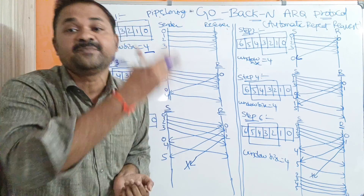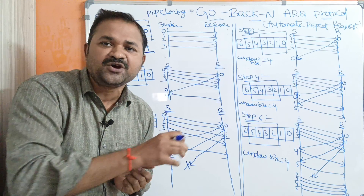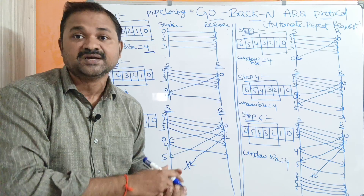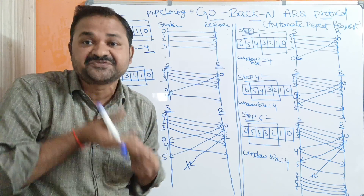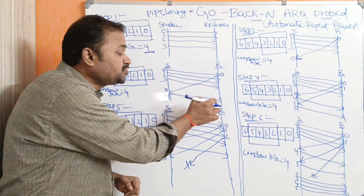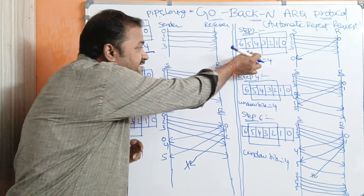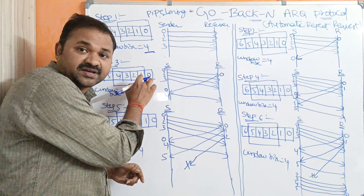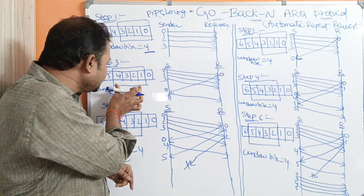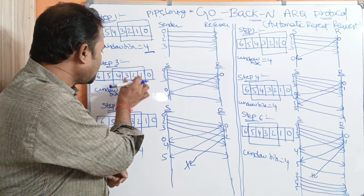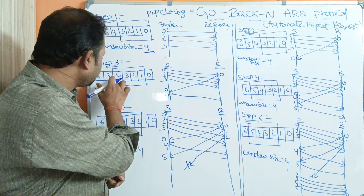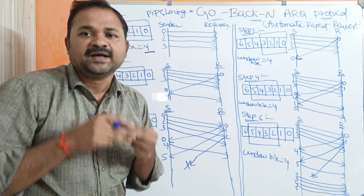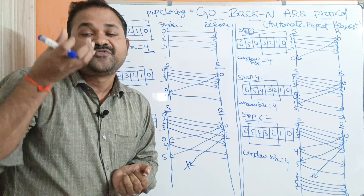In step three, upon receiving the acknowledgement from the receiver, the sender can send another frame. The window size is four, but the acknowledgement for frame zero is already received, so one position is free. The sender sends the fourth frame to the receiver. The window slides by one position, so now the window is from frame one to frame four — the window size remains four.